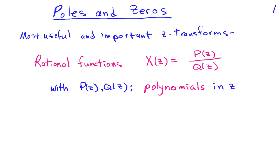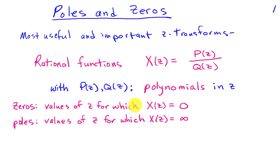In this lecture, we're going to learn about the important concepts of poles and zeros. The most useful and important types of Z-transforms are those described by rational functions — that is, where the Z-transform X of Z is a ratio of polynomials, P of Z divided by Q of Z. We define the zeros of X of Z as the values of Z for which X of Z equals zero, and the poles are the values of Z for which X of Z equals infinity.